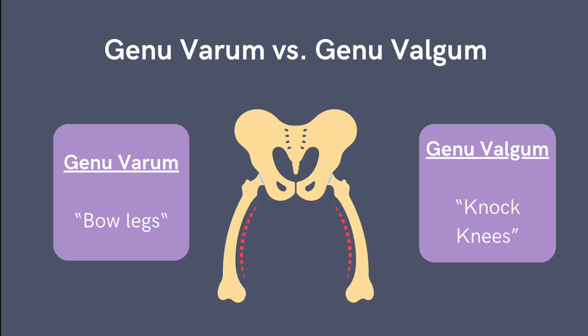Next, let's review genu varum and genu valgum. Genu varum is a condition that causes the knees to angle outward, creating a noticeable gap when standing with the feet together. You may also hear it referred to as bow-legged, and it's common in toddlers, typically resolving by age two or three as children grow.